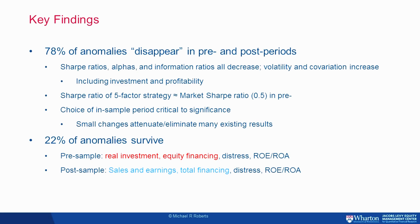The Sharpe ratio of a five-factor strategy prior to 1963 is about the same as that of the market, right around 0.5. What we ultimately show is that it's not just about the first half of the 20th century — if you tweak the in-sample period by just a couple of years, the anomalies all but disappear.